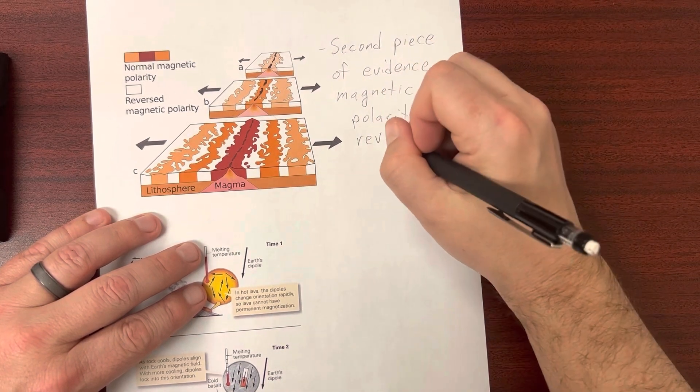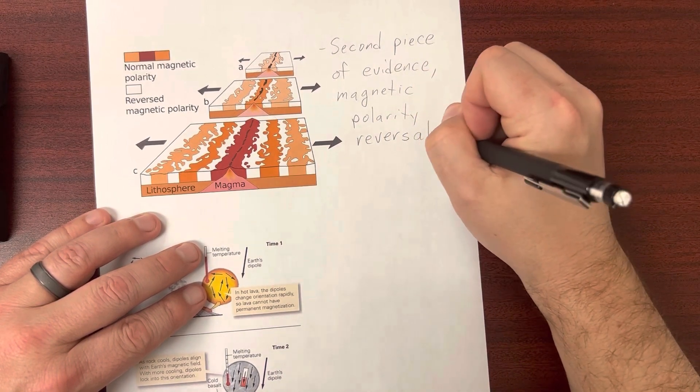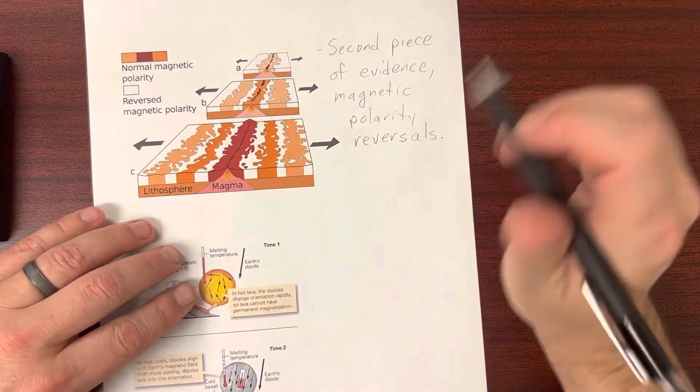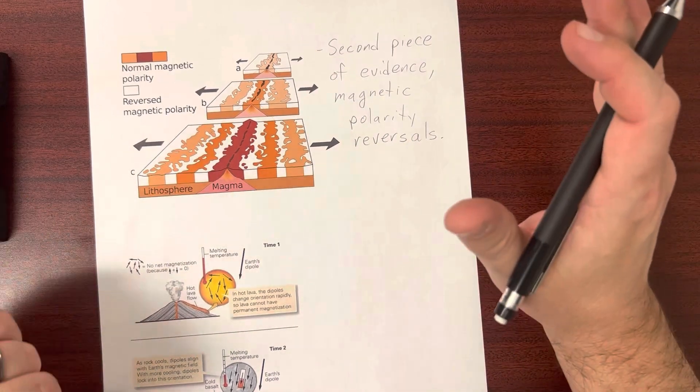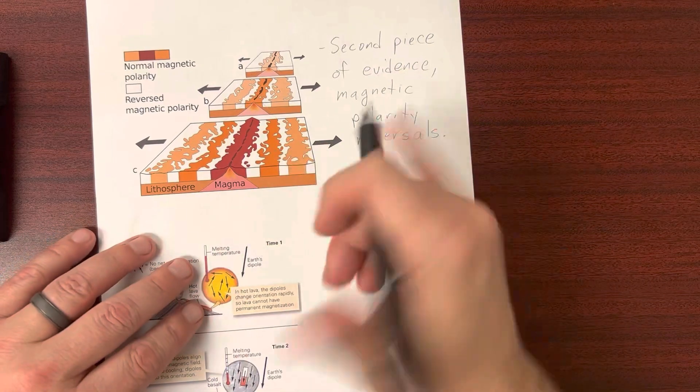And we get these reversals. The reason we're going to get these reversals is Earth's north and south pole periodically switch, and they change. This happens over the course of tens of thousands of years. It's not always the same, but they flip-flop.